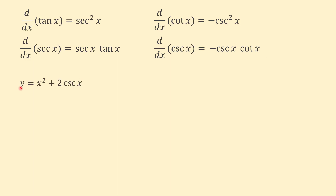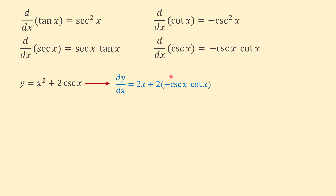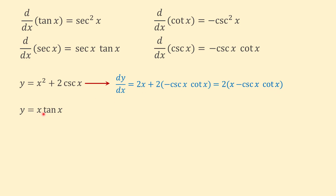Let's try some examples. y equals x squared plus 2 cosecant of x. The derivative equals 2x — since the derivative of x squared is 2x — plus 2 times the derivative of cosecant of x. From the formula, the derivative of cosecant of x is negative cosecant of x times cotangent of x. If we factor 2 from both terms, we can rewrite the answer as 2 times open parenthesis x minus cosecant of x cotangent of x close parenthesis.